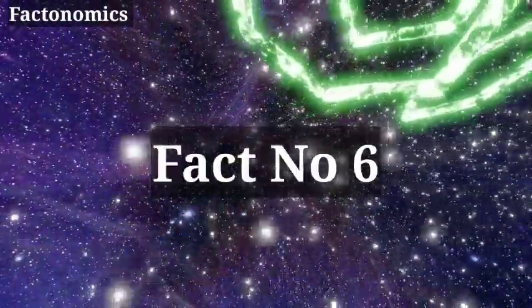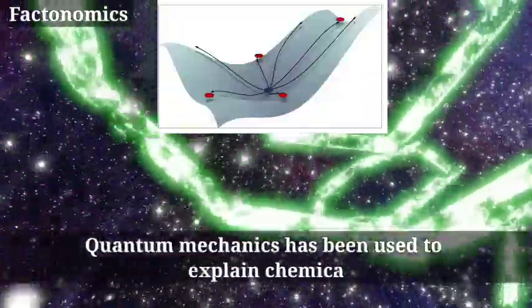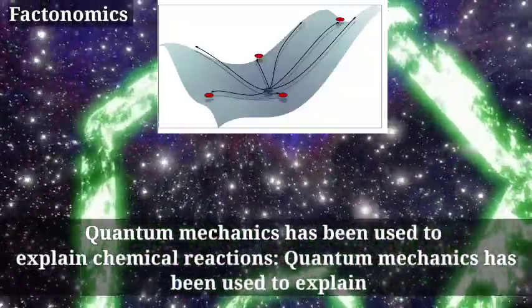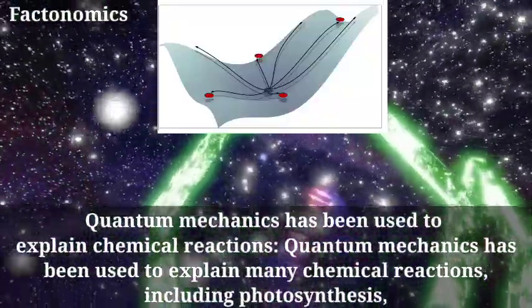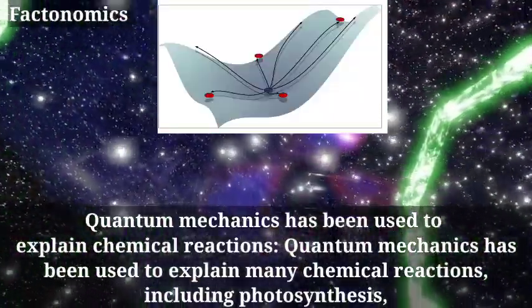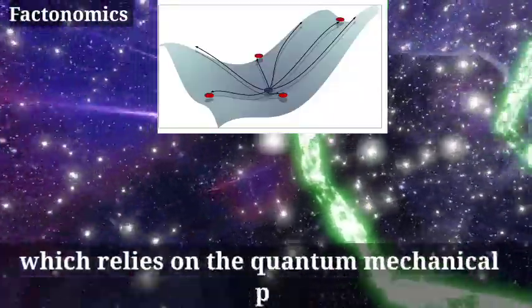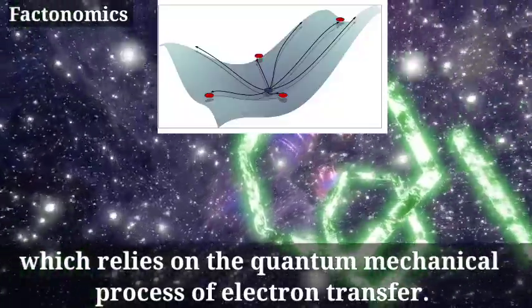Fact number 6. Quantum Mechanics has been used to explain chemical reactions. Quantum Mechanics has been used to explain many chemical reactions, including photosynthesis, which relies on the quantum mechanical process of electron transfer.